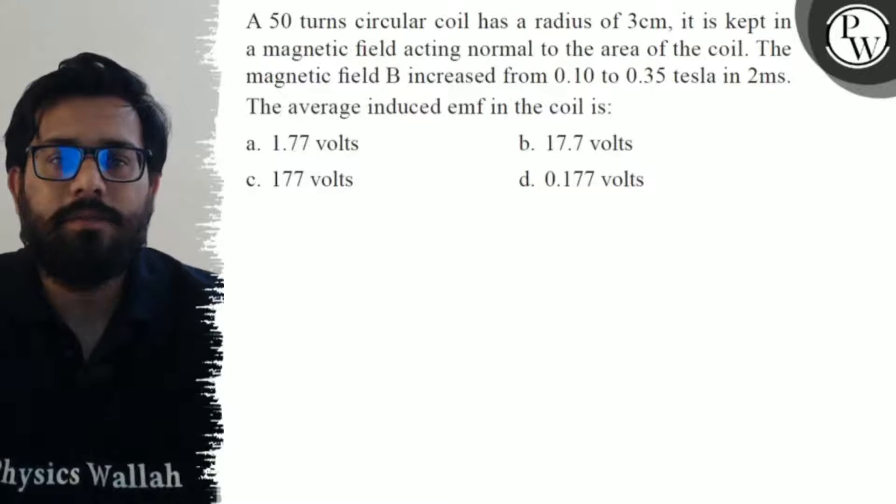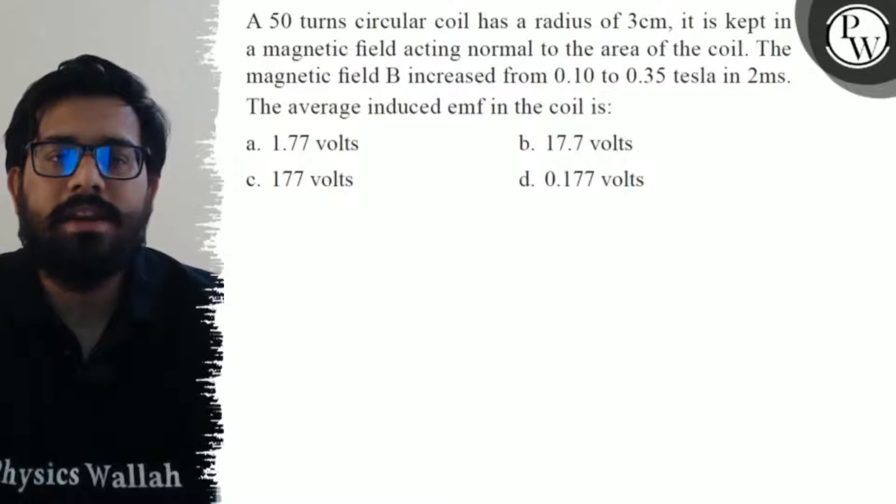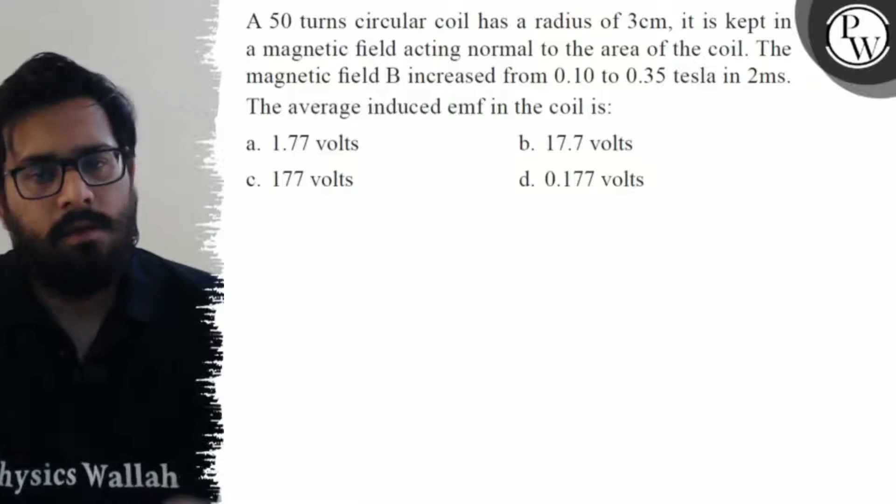The average induced EMF in the coil is: first option is 1.77 volts, second option is 17.7 volts, third option is 177 volts, and the fourth option is 0.177 volts.